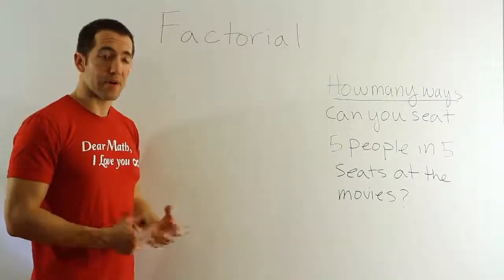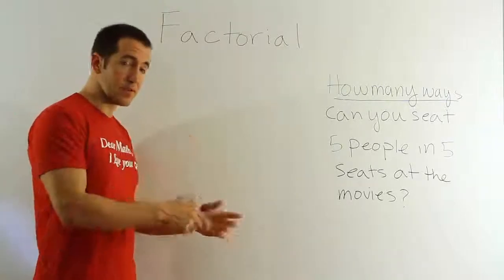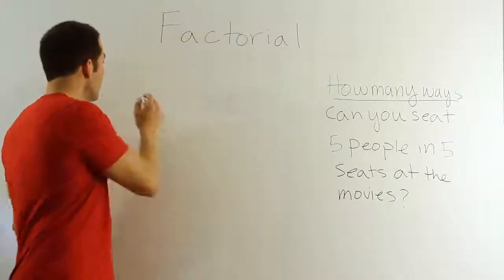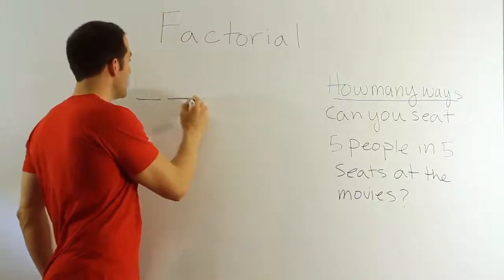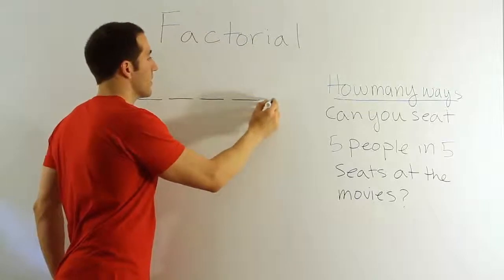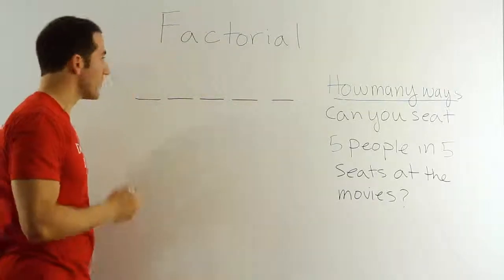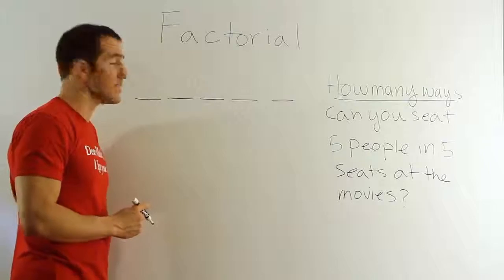So there are five steps. Sit a person in the first seat, sit a person in the second seat, so on and so forth. Let's draw a space to represent each one of those steps. There are five spaces to represent the five steps of sitting five people into five seats.